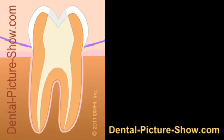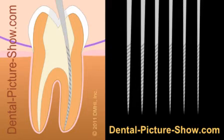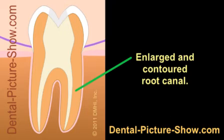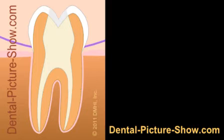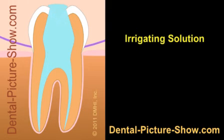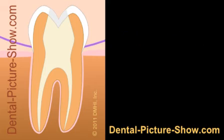A dentist will utilize a series of files, each of which has a slightly larger diameter than the one preceding it. They're used to enlarge and smoothly contour each canal. This is an important factor for both the cleaning process and the sealing step that will follow. In addition to filing, the dentist will also flush out the tooth using an irrigating solution, a step performed repeatedly throughout the entire cleaning process.